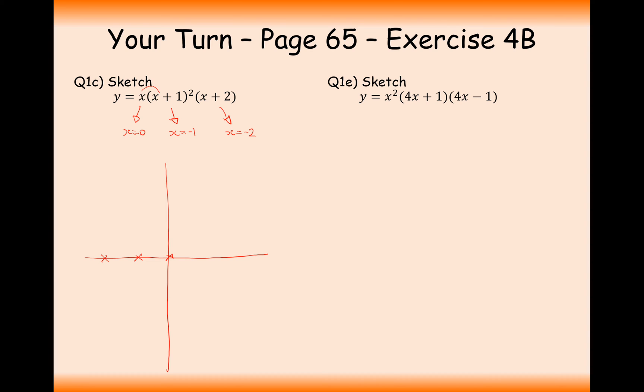What type of quadratic graph is it? Well, it's going to be x times x squared times x, so that's going to be positive x to the power of 4, and it's going to repeat at minus 1. Where's it going to go through the y-axis when x equals 0, so we're going to get 0.